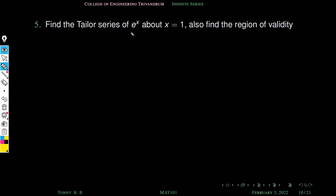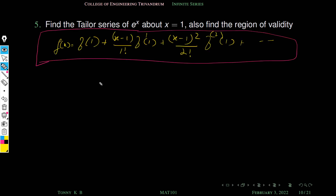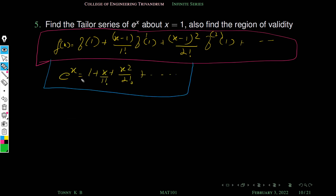Next problem: find the Taylor series of e^x about x equal to 1. Either you can use the original formula — that means you differentiate, find all the derivatives of e^x, evaluate f of 1, f dash of 1, etc., and substitute into the formula. That is the straightforward method. Here we are going to use another technique, because we already know the Maclaurin series of e^x. This series is valid for all real numbers.